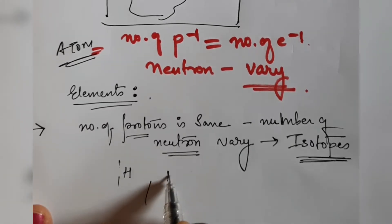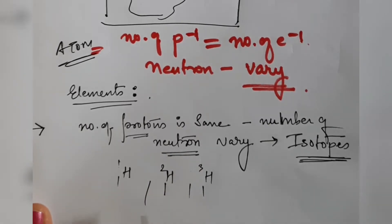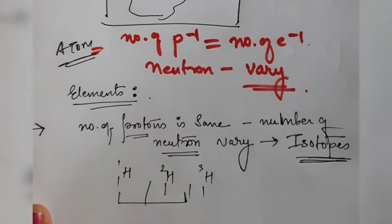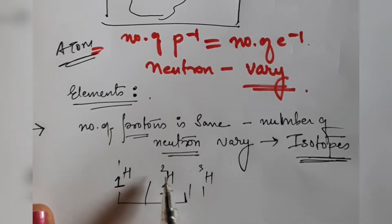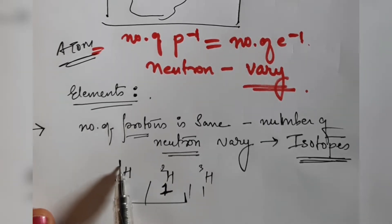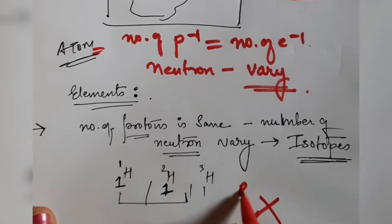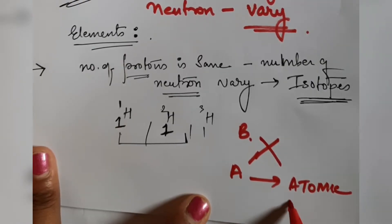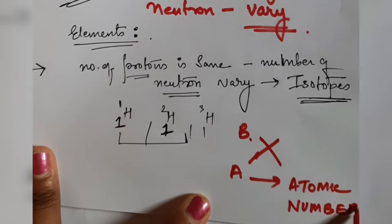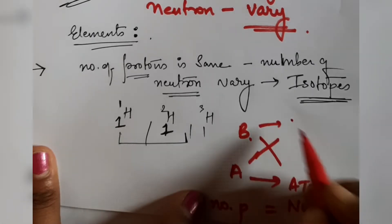For example, there is hydrogen-1 (¹₁H), hydrogen-2 (²₁H), and hydrogen-3 (³₁H). These are all isotopes of hydrogen, where the number of protons is the same. Now, when we consider an element X written as ᴬ_B X, this B is called the atomic number, which is equal to the number of protons.